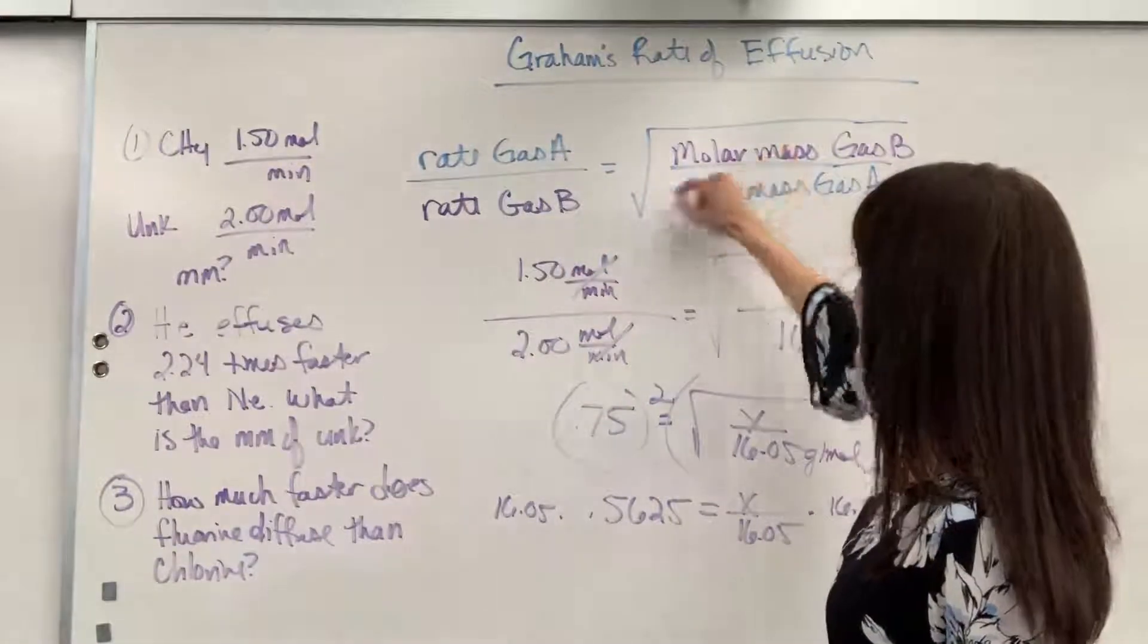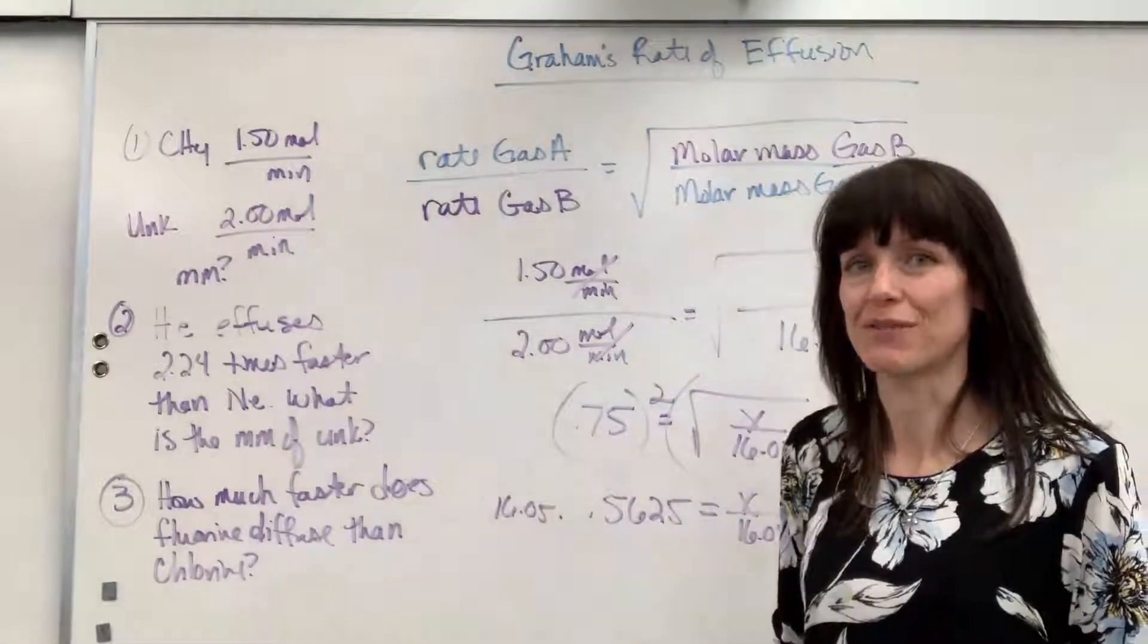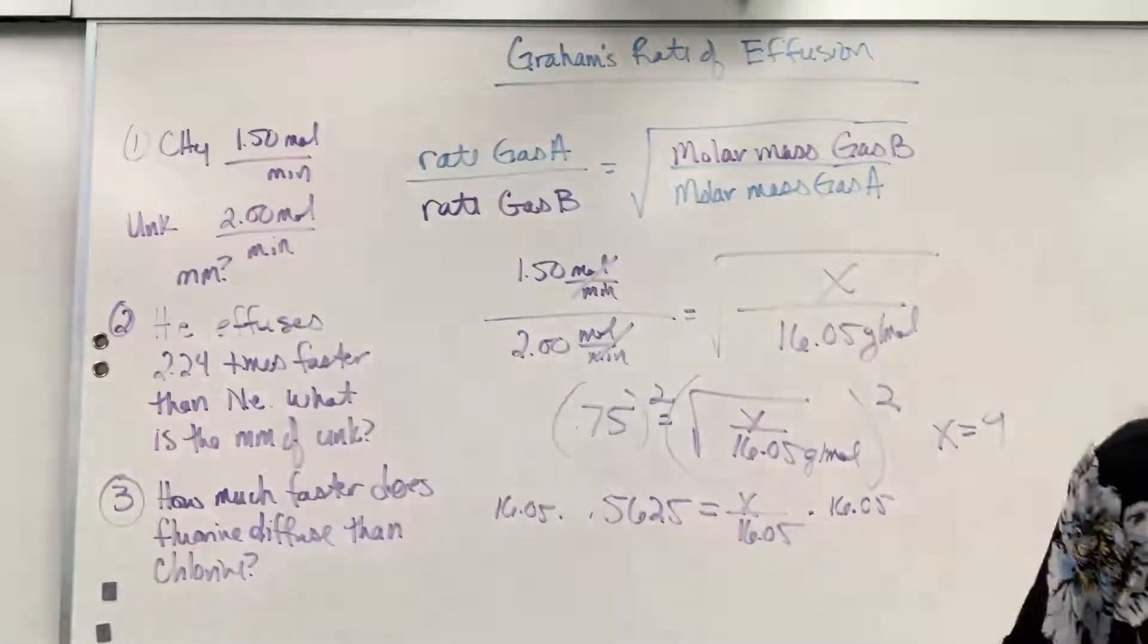The beryllium gas B, right there, it has a faster rate of effusion. So there is your first example.